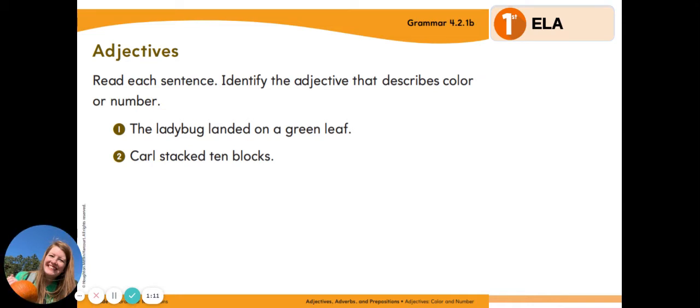What is the adjective in this sentence? Right. The adjective is green. It's a color word. It describes the noun leaf. Let's try number two.